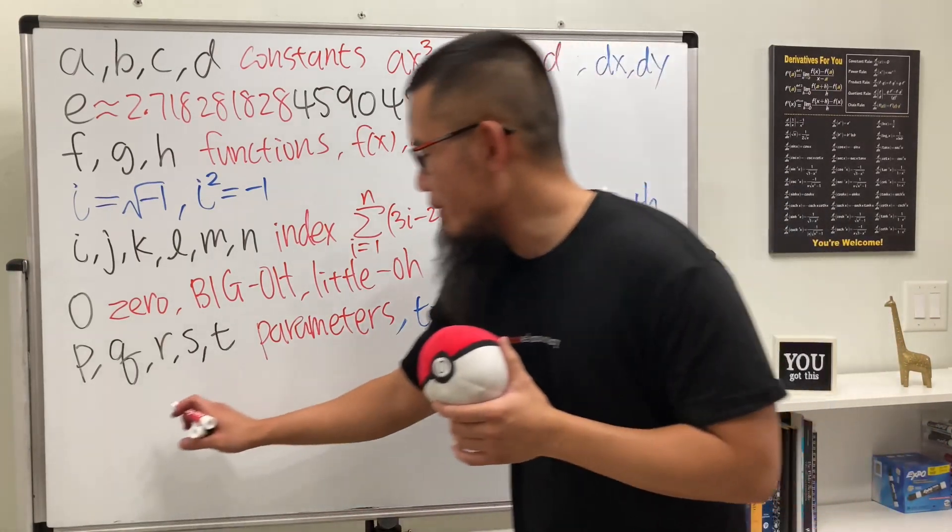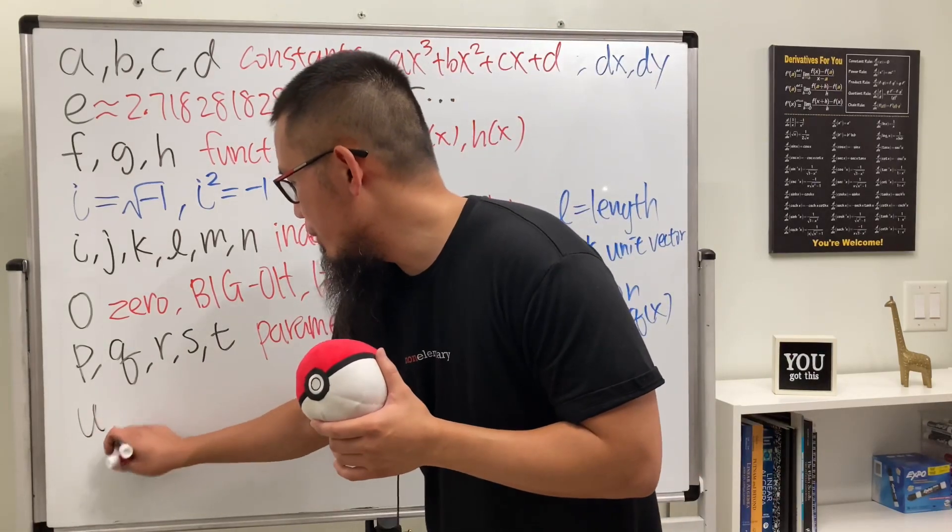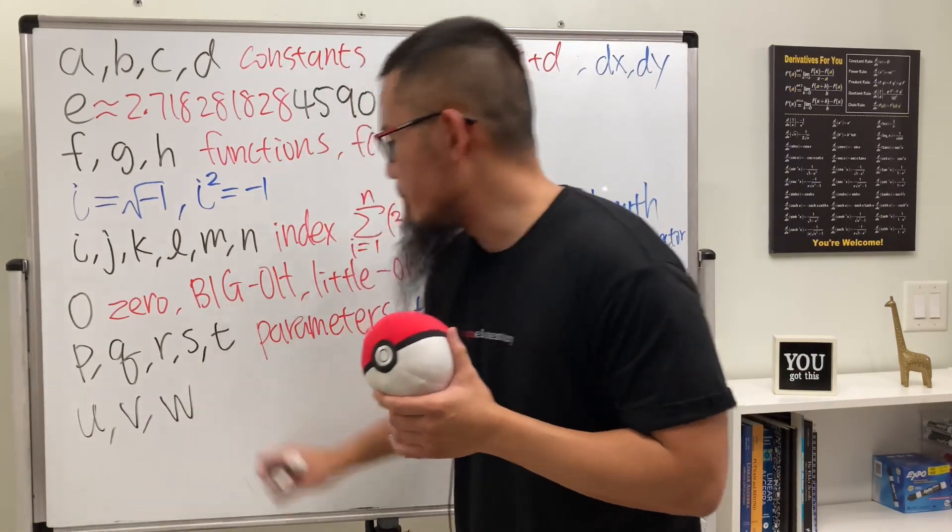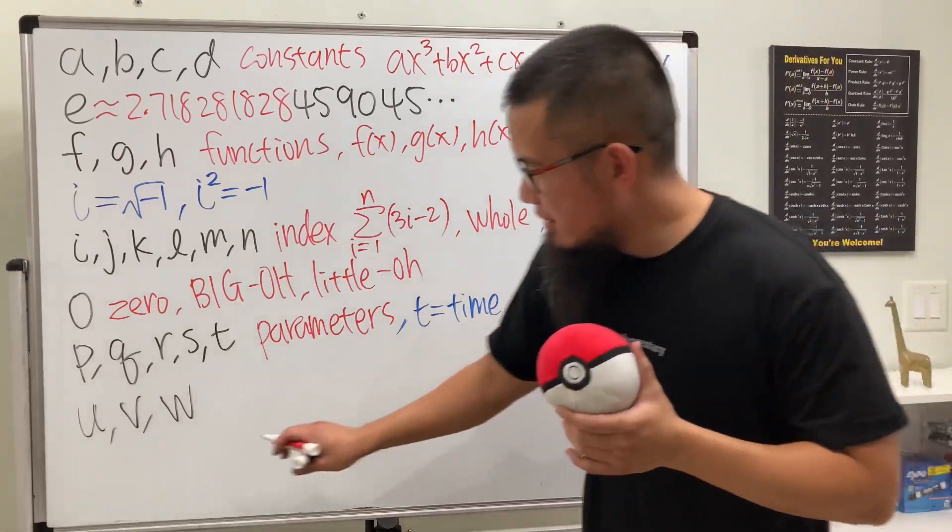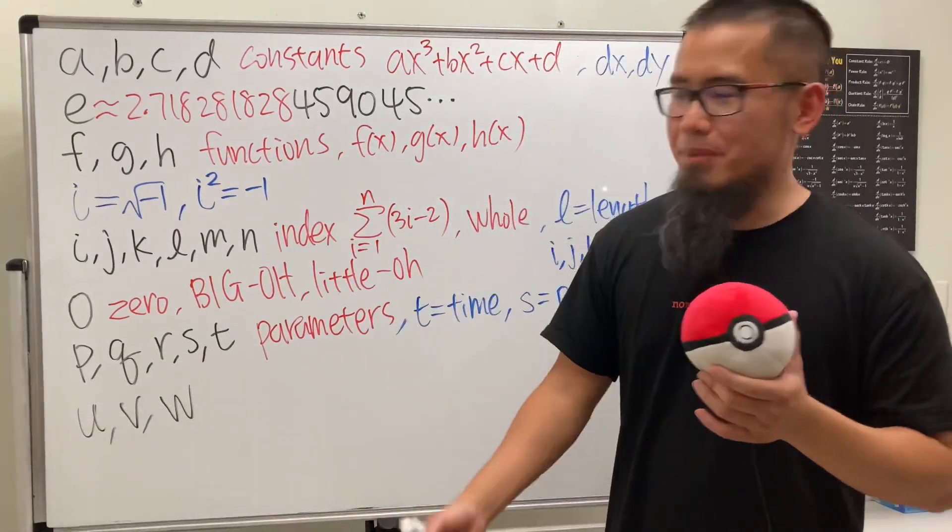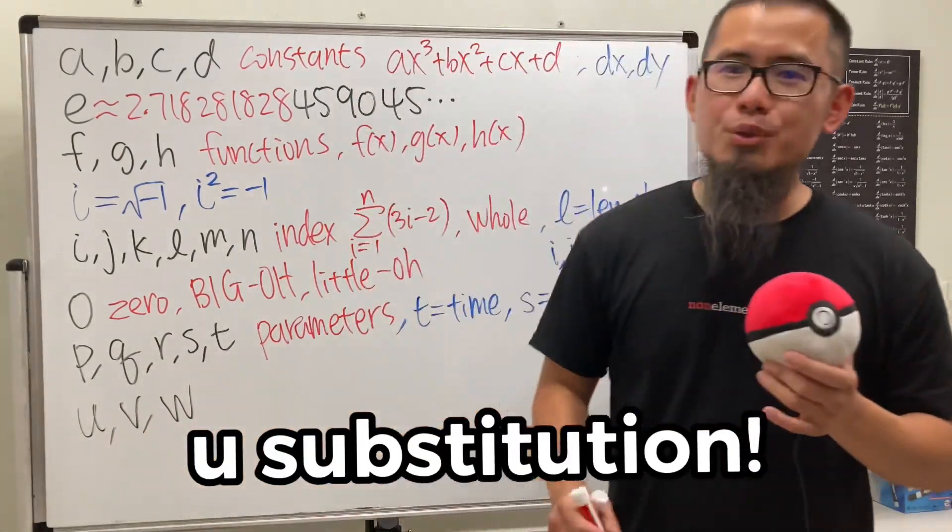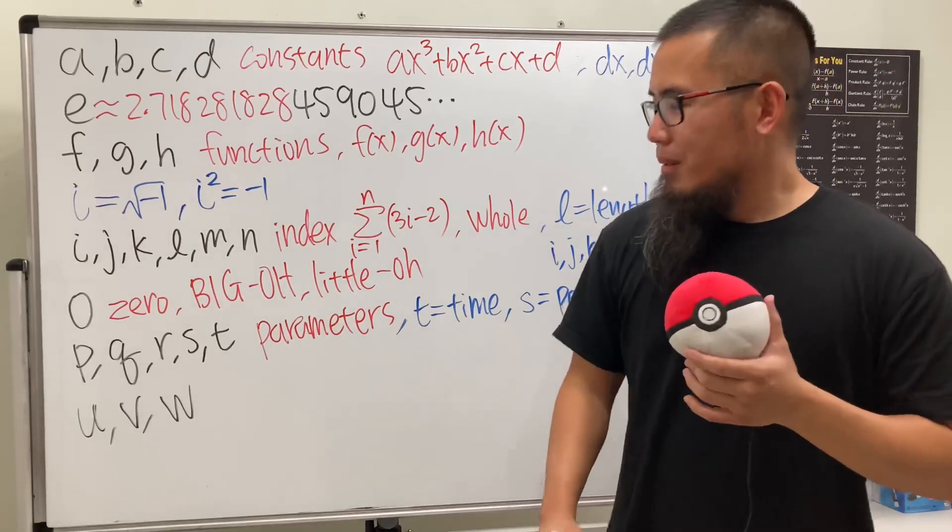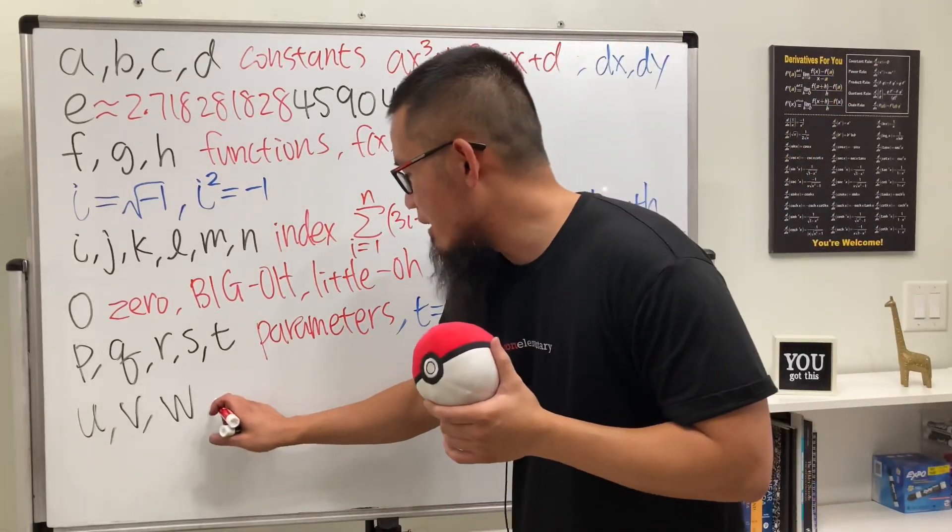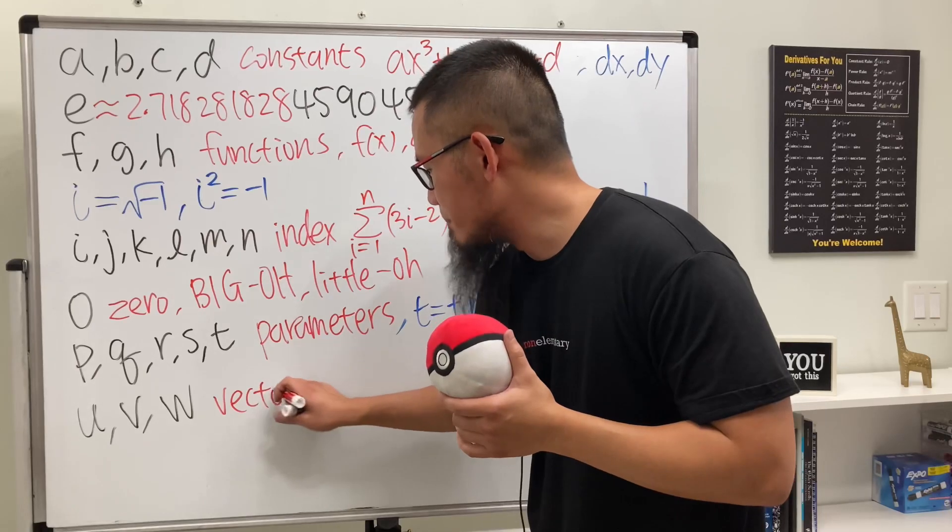What's next? We have u, v, and w. When I see this, I think about u-substitution when we're doing integrals, but I'd like to put down vectors first before we talk about substitutions.